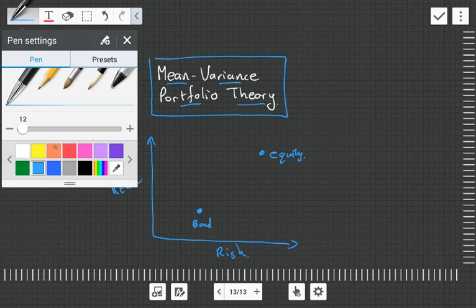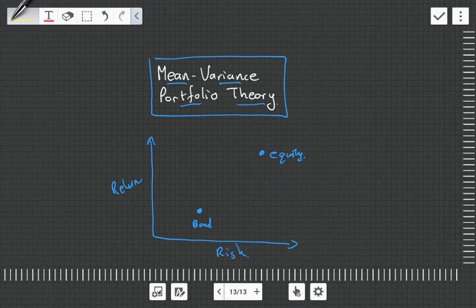The general idea was that you could have a combination of both of these assets. So this would be 100% equity, this would be 100% bonds, and this yellow line indicates something in between. And that the risk and return relationship would follow this yellow line.